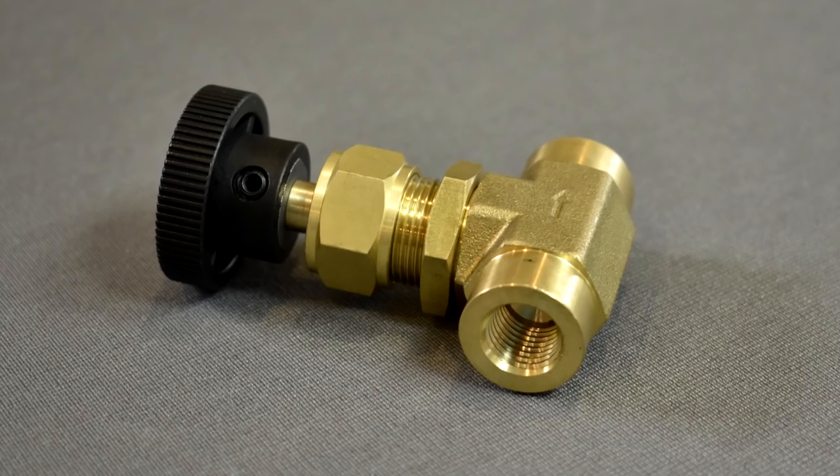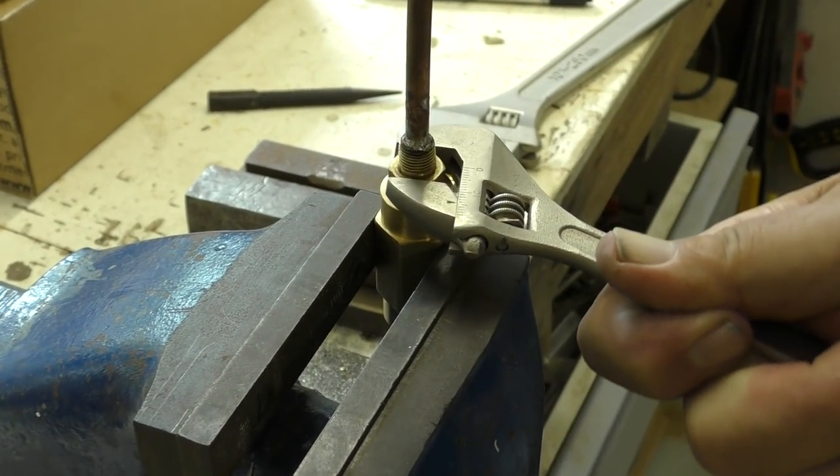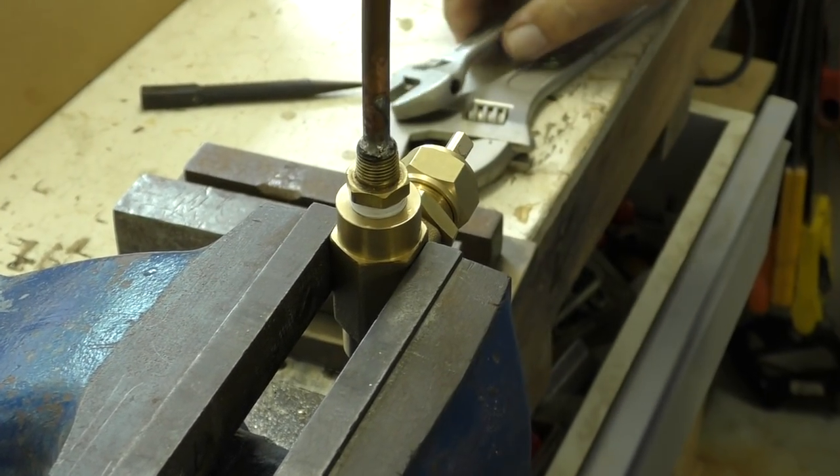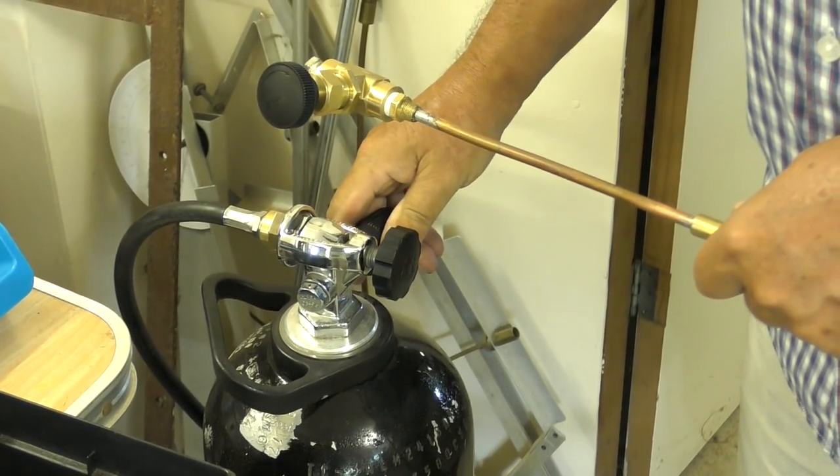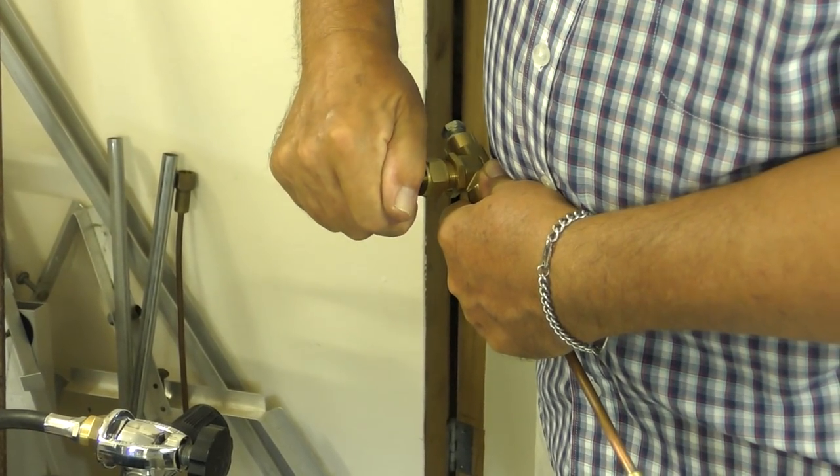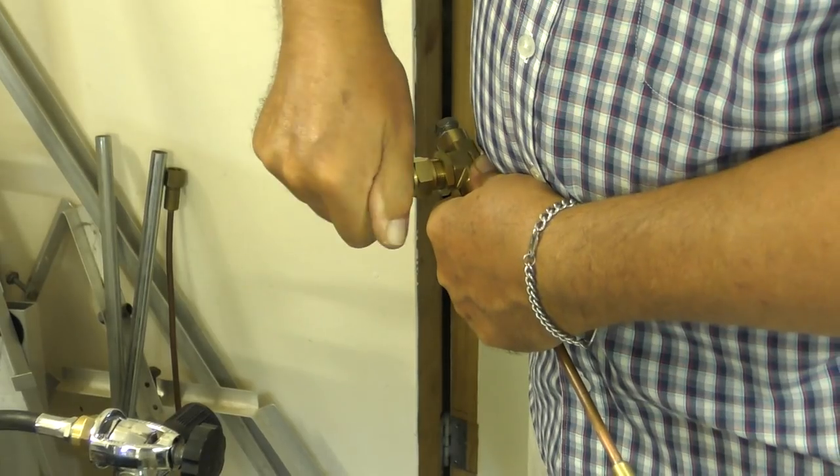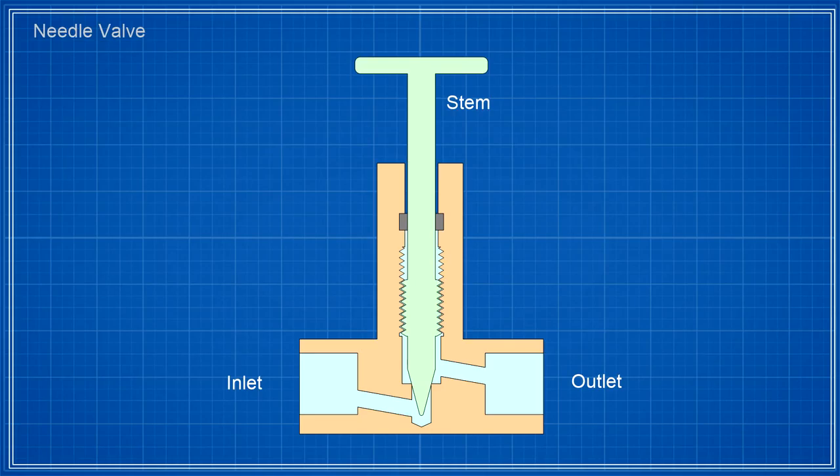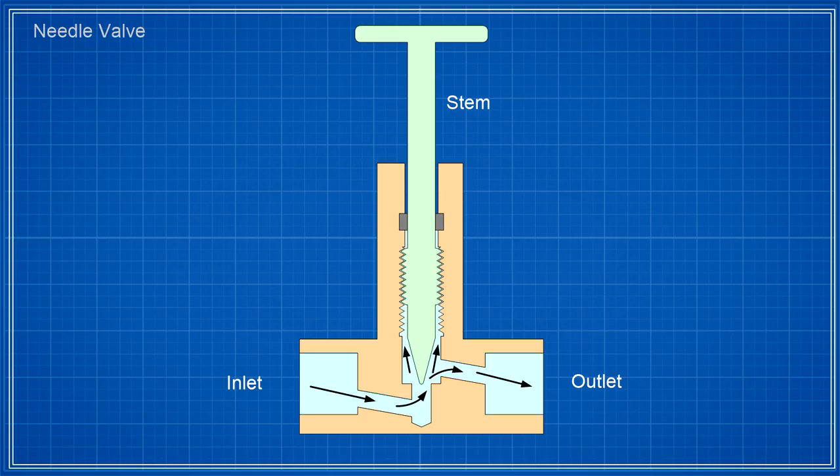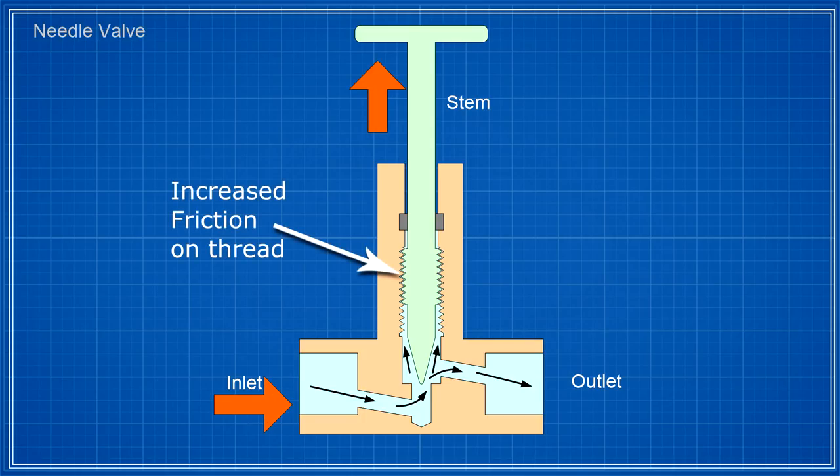For the main control valve we originally bought a $20, 3000 psi needle valve from eBay. The valve itself was well made but suffered from a design flaw that made it harder and harder to open and close as the pressure increased. The problem is that the stem under pressure acts as a piston and the only thing preventing it from being ejected is the thread. As the pressure increases, more force is exerted on the thread increasing friction and making it harder and harder to turn.